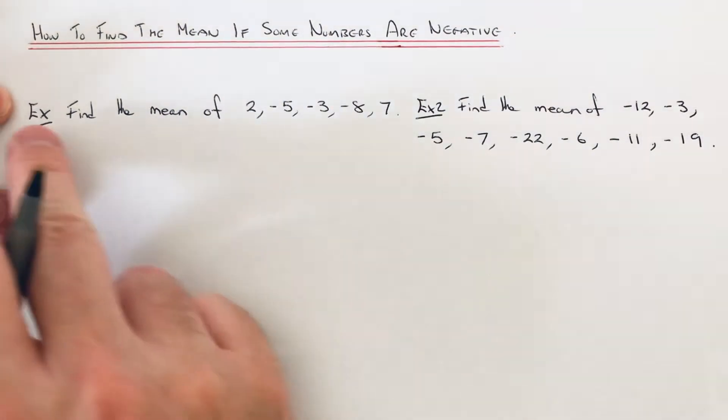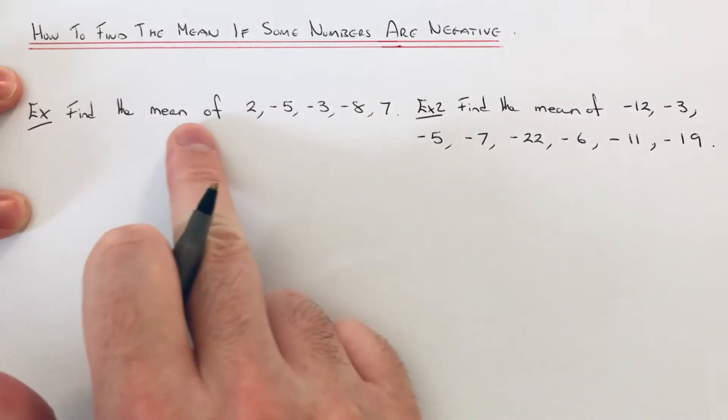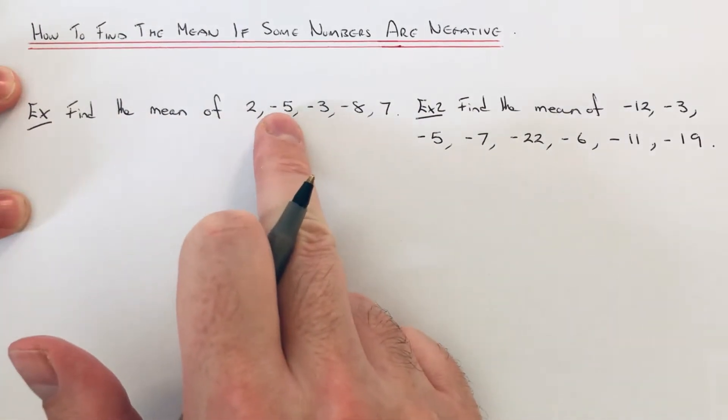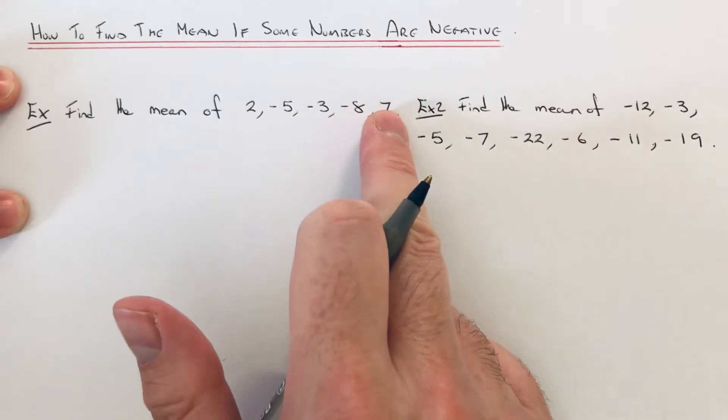So let's have a look at the first example. You've got to find the mean of 2, minus 5, minus 3, minus 8, and 7.